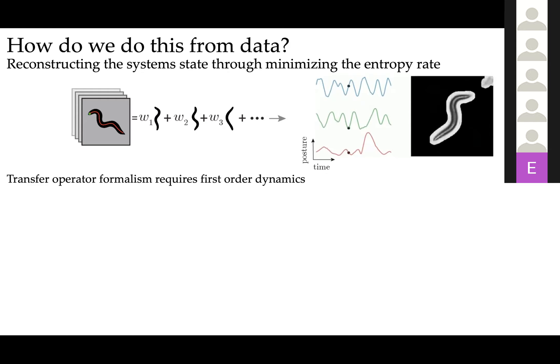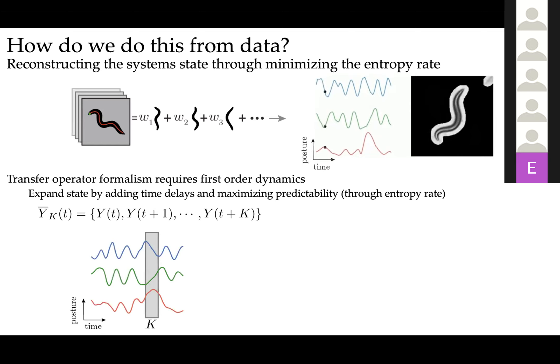Another way to add this dynamical information is to explicitly add a time delay. So if I give you two time points, now you will be able to make an accurate prediction of the future. This is basically what we're going to do for the worm. We're going to take these posture measurements and add time delays to these posture measurements and assess basically the predictability of this new state space that has more dynamical information through the entropy rate of the dynamics, which is basically a measure of the unpredictability of the system.